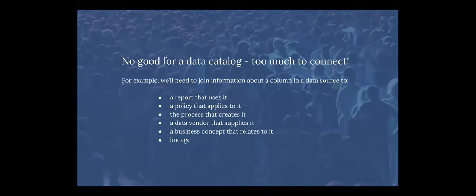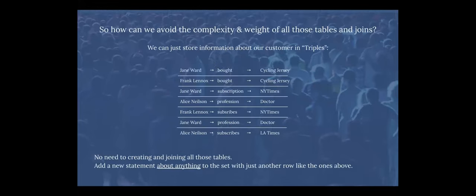In a catalog, we need to connect all kinds of things — a column of data to a report that uses it, a policy that applies, or a process that builds it. It's really unlimited what we might want to connect. So putting things in all kinds of tables doesn't work. So what if we store things like this — using what are called triples? This isn't a table; it's just a series of independent statements.